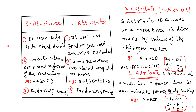Here A tends to B, C, D — where A is the root node and B, C, D are called children. If you want to find the value of A, it depends on B, C, and D. That is, A.S = B.S, A.S = C.S, A.S = D.S. Collectively we can write A.S = f(B.S, C.S, D.S). Here S indicates the synthesized attribute. So this is what we call synthesized attribute — it depends on its children. Here A is root node and children nodes are B, C, D.